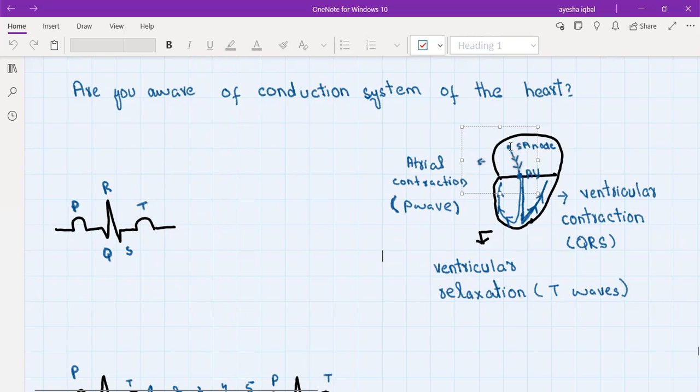Then the electrical signals travel to a point at the junction of the atria and the ventricles, and this point is called AV node. There is a little pause here and this pause is represented by this PR interval which is the straight line. After this, the signal spreads downward through the conduction system of the ventricle which is called bundle of His and Purkinje fibers, and it spreads throughout the ventricle. The ventricle is depolarized and this is shown by the QRS complex on the ECG.